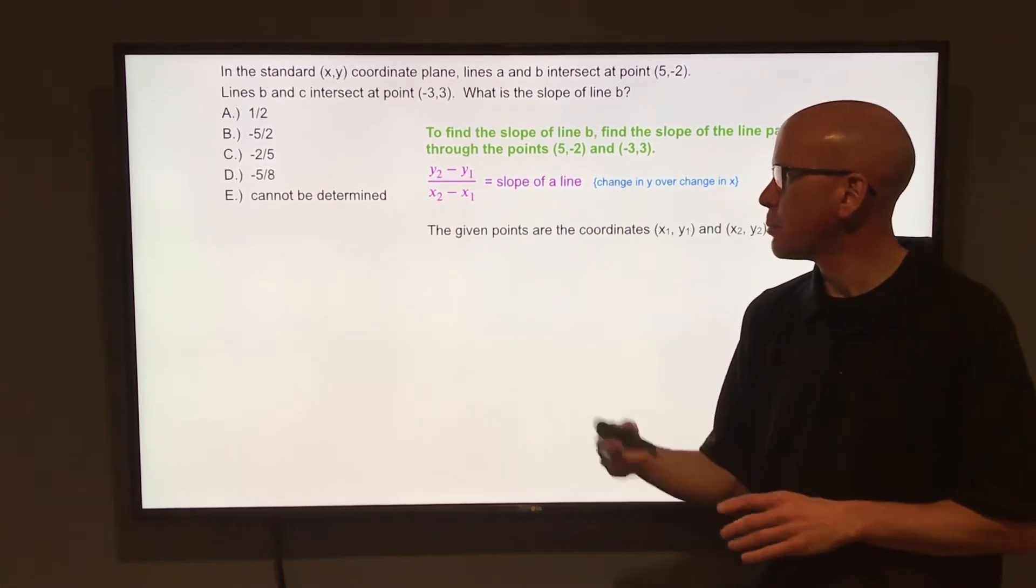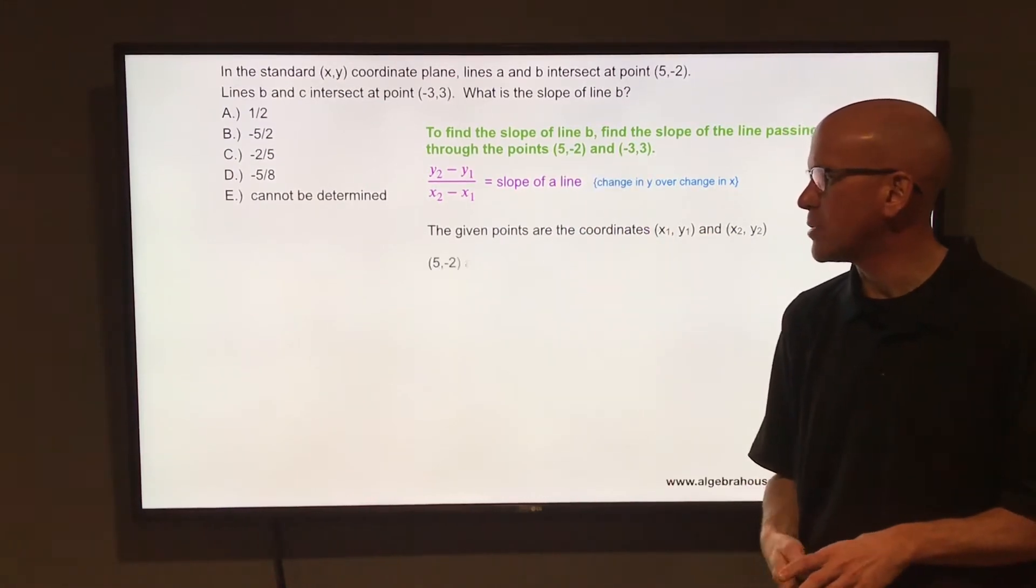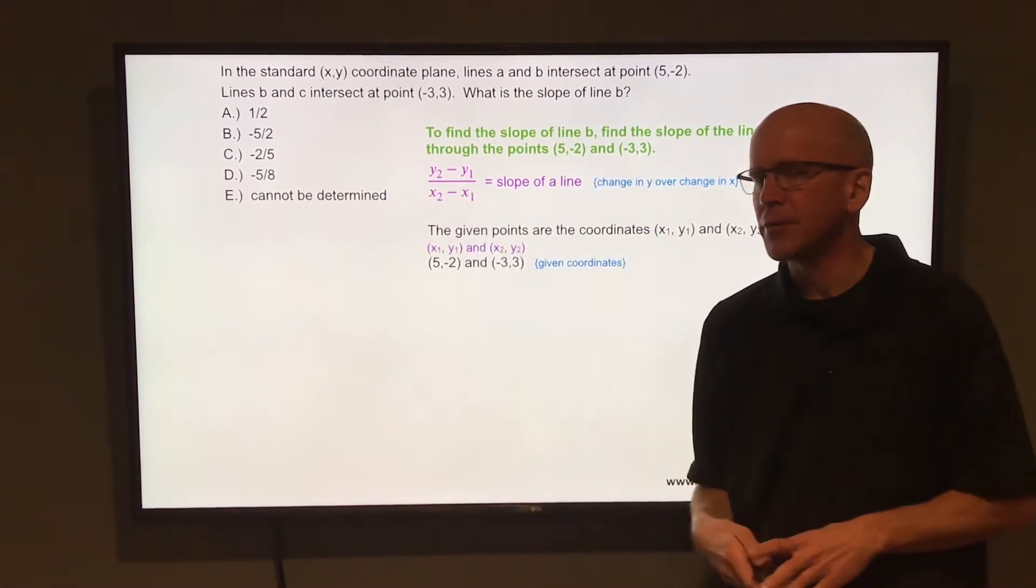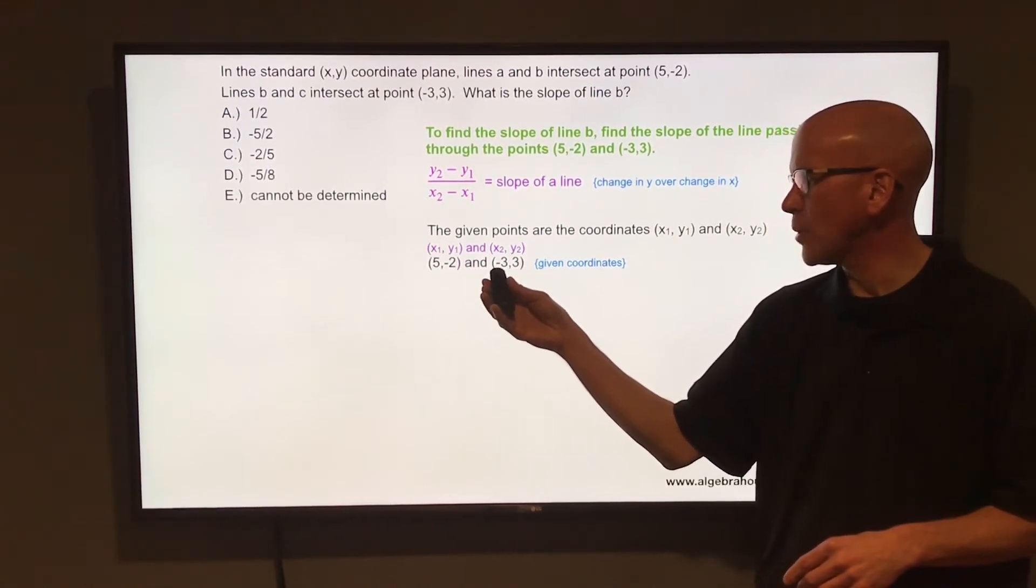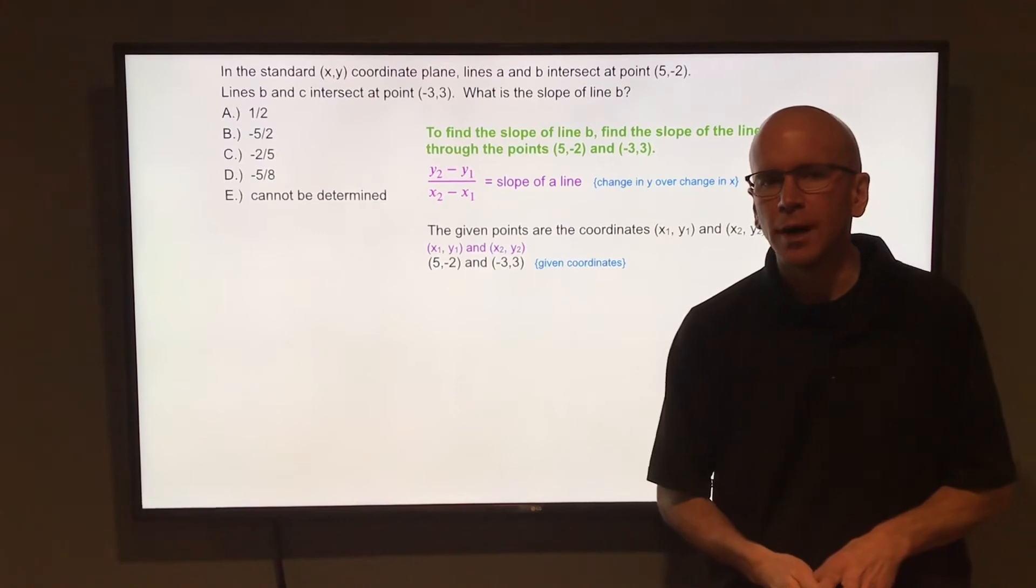So we're going to use those two points, (5, -2) and (-3, 3). If you are using the slope formula and thinking that way, the first point (5, -2) that would be x1, y1. The second point (-3, 3), that would be the x2, y2.